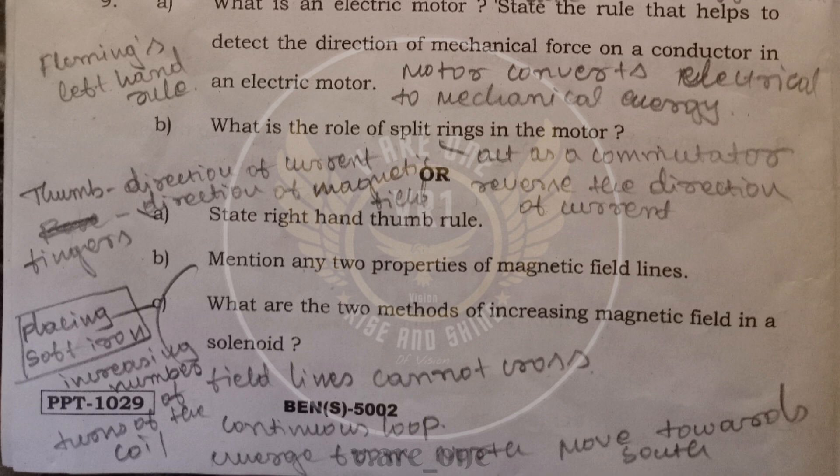And here we will use Fleming's left hand rule. According to Fleming's left hand rule, the forefinger represents the direction of magnetic field. Thumb represents the direction of force acting on the conductor. And middle finger represents direction of the current. And split rings act as a commutator which reverse or change the direction of current in the circuit.